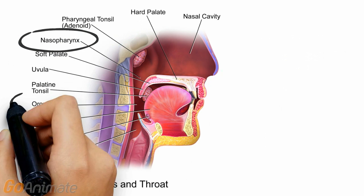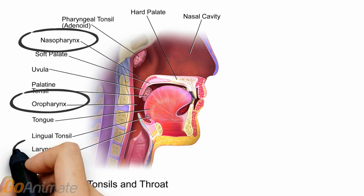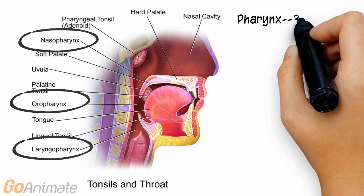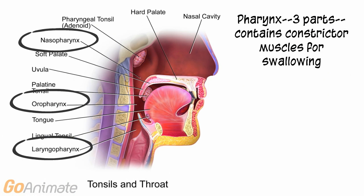The pharynx consists of three parts. The upper part is called the nasopharynx, the middle section is called the oropharynx, and the lower section is the laryngopharynx. The pharynx contains constrictor muscles that function in swallowing.